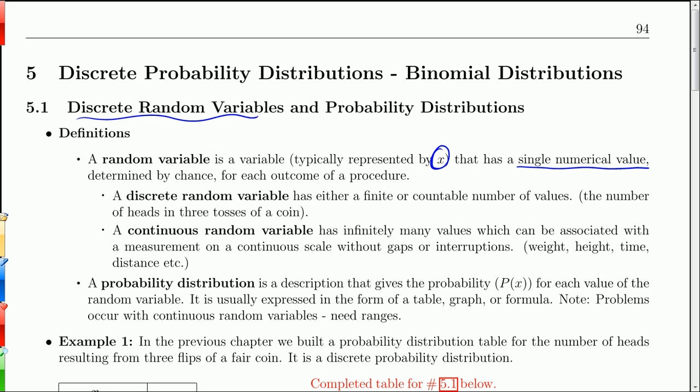A discrete random variable is either finite, like a finite number of values, or countable. You can count them one, two, three, four. It might not stop anywhere in particular, but you can count them up.